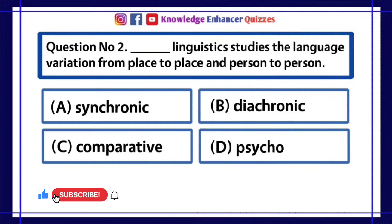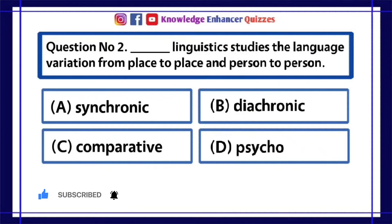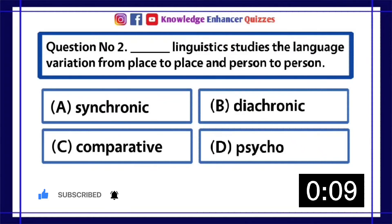Question Number 2: Dash linguistics studies the language variation from place to place and person to person. A. Synchronic, B. Diachronic, C. Comparative, D. Psycho.